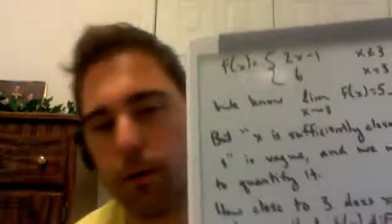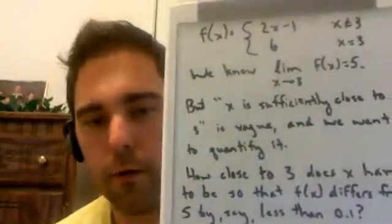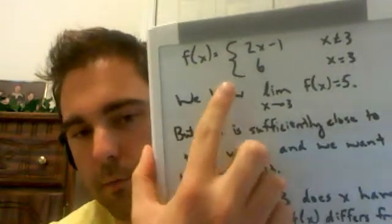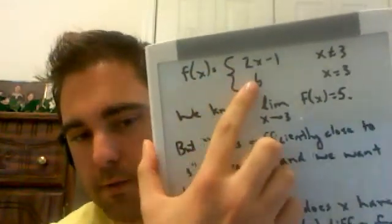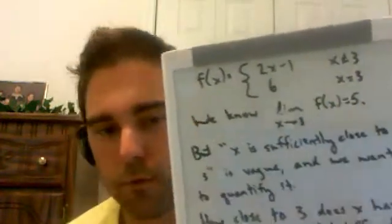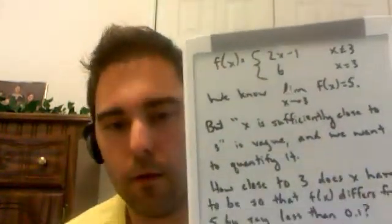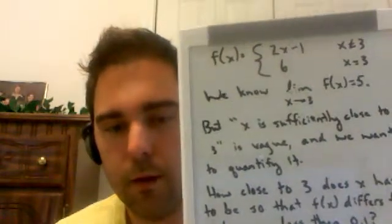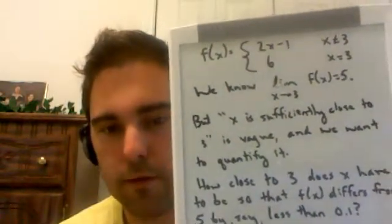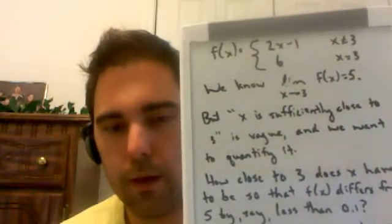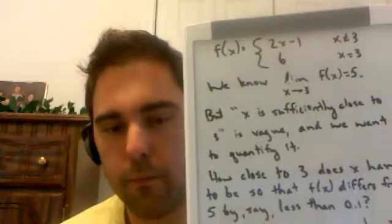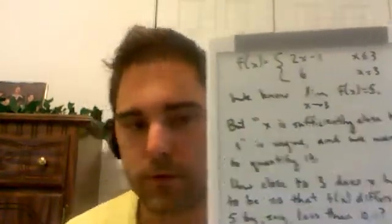We want to talk about the precise or formal definition of a limit. We've seen multiple times already that by the definition of a limit, the limit of this example — f of x equals 2x minus 1 if x is not equal to 3, or 6 if x is equal to 3 — is a piecewise defined function. We know that the limit as x approaches 3 of f of x equals 5. In other words, we can make f of x equal to 5 by taking x sufficiently close to 3.